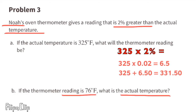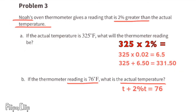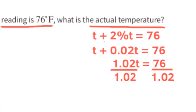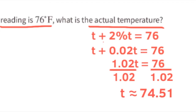Part B: If the thermometer reading is 76 degrees Fahrenheit, what is the actual temperature? We set up the equation: t plus 0.02t equals 76, which becomes 1.02t equals 76. Dividing both sides by 1.02, the actual temperature is approximately 74.51 degrees Fahrenheit.